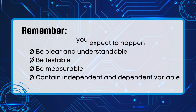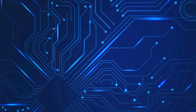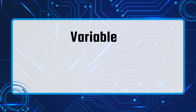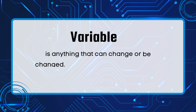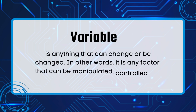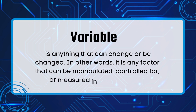Now, what is a variable? When we say variable, it is anything that can change or be changed. In other words, it is any factor that can be manipulated, controlled for, or measured in an experiment. There are three types of variables.